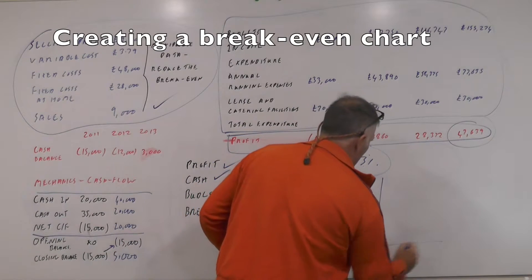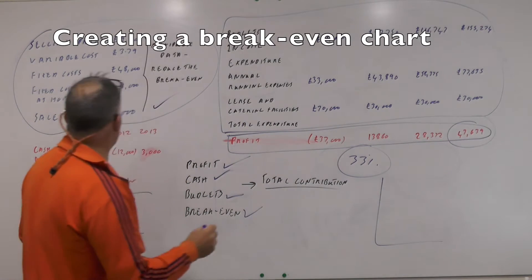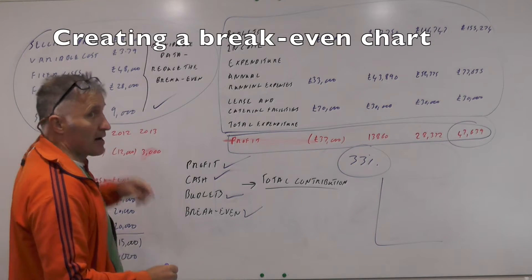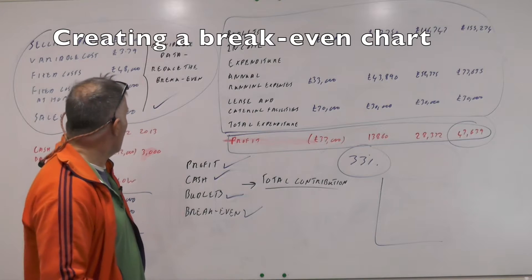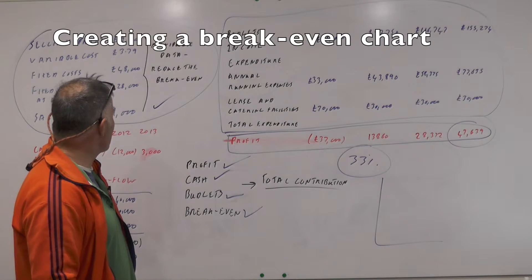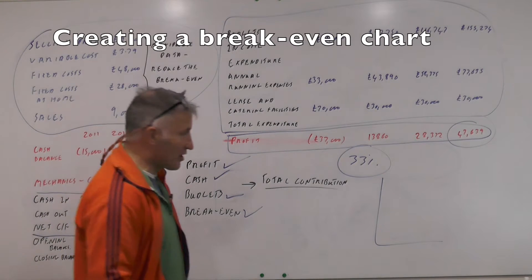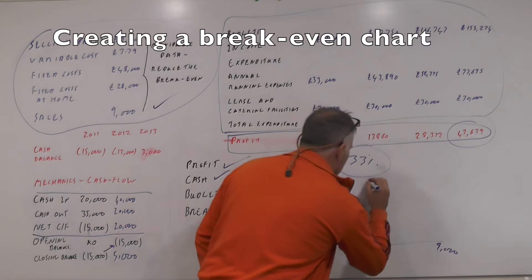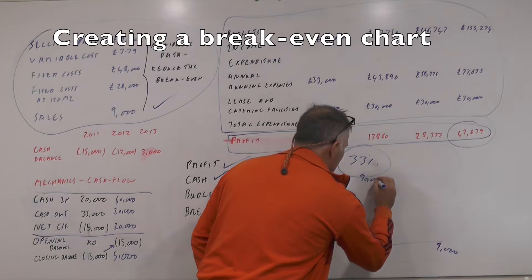So we've got the breakeven analysis on here. We sell 9,000 goods, 9,000 times £920 is 82,800 I think.